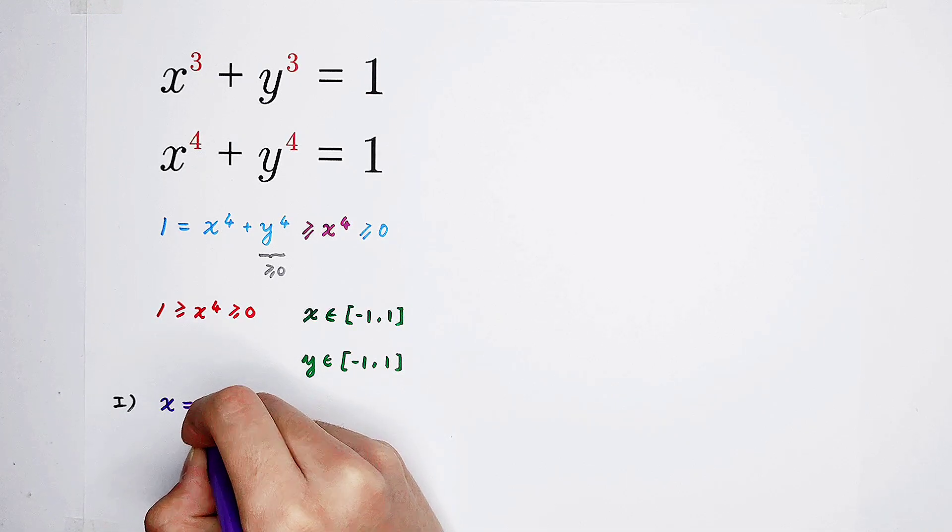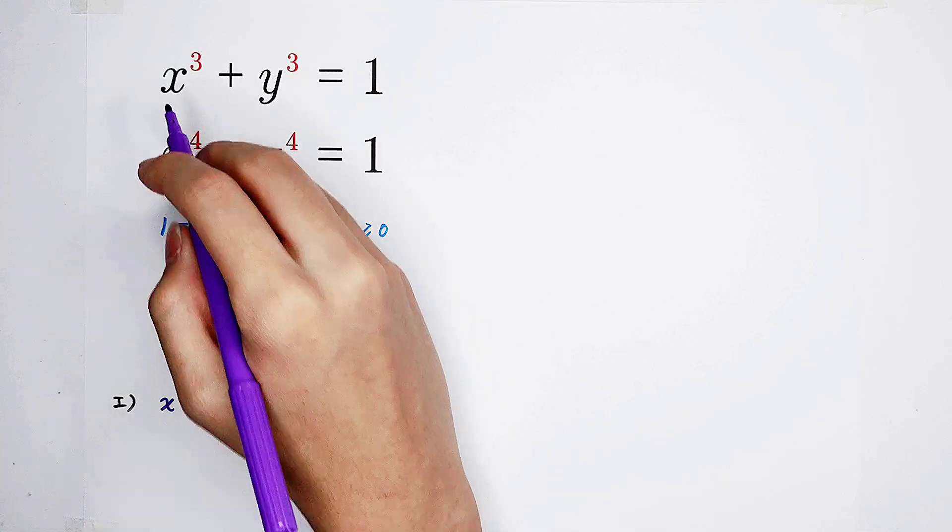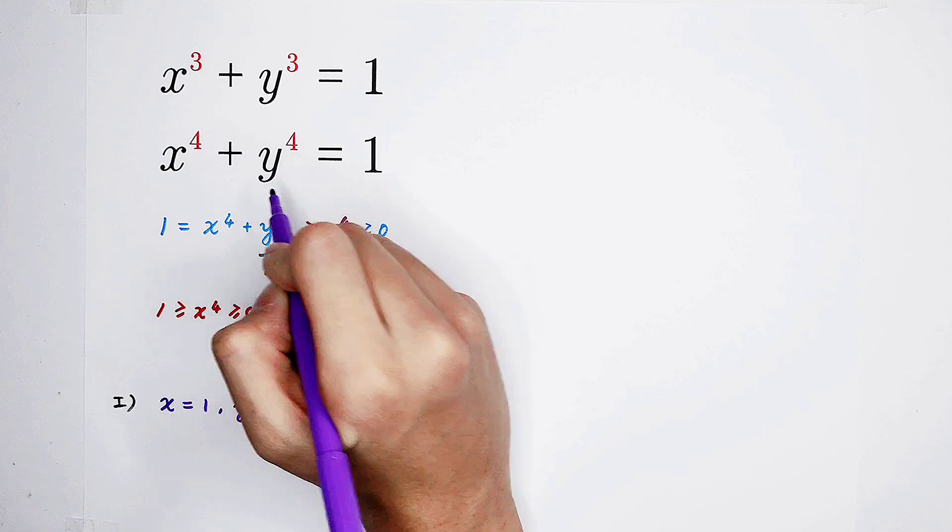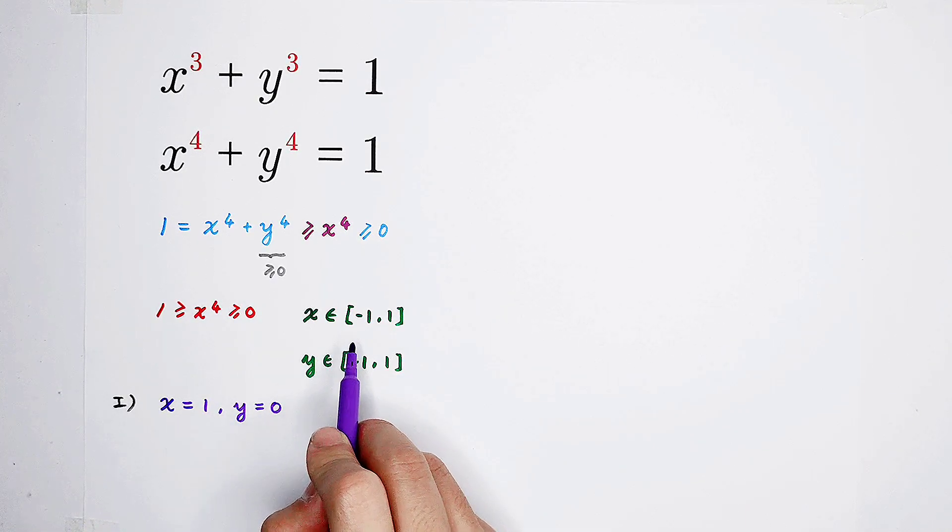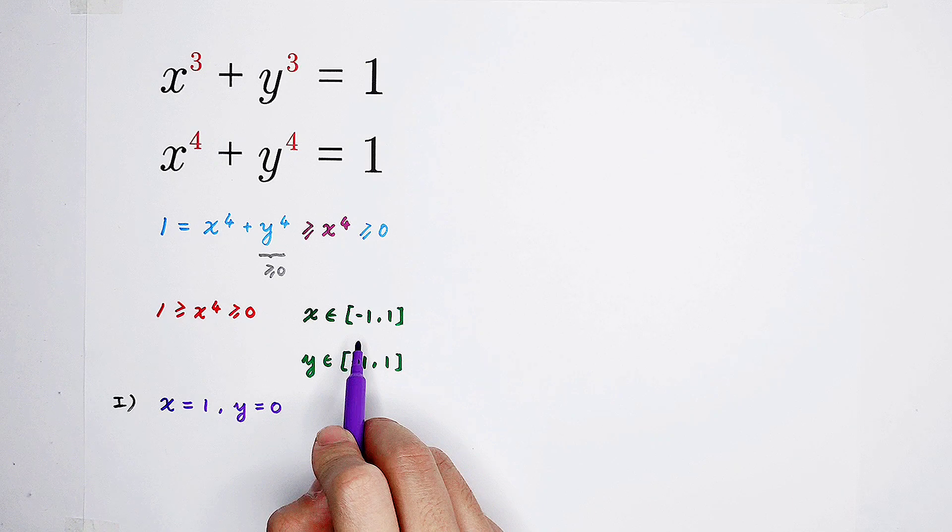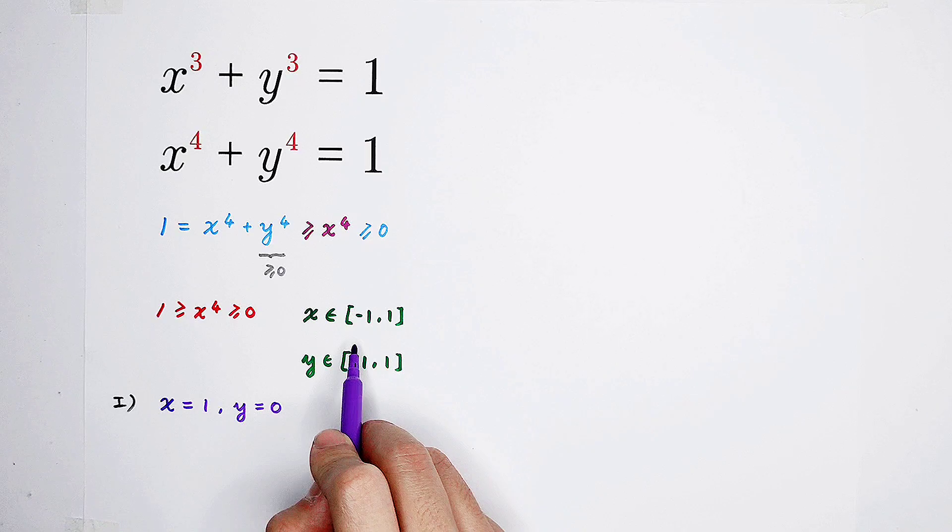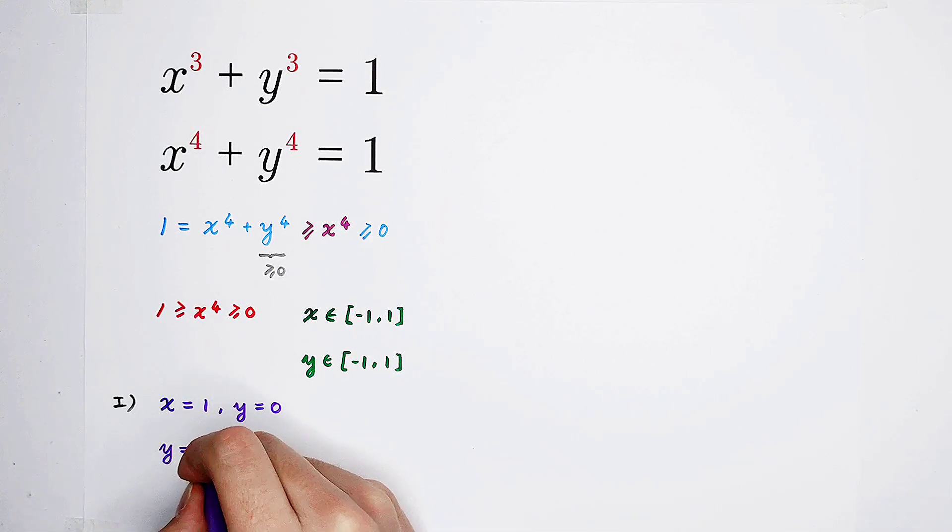If x equals 1, y is 0. 1 cubed plus 0 cubed is 1. 1 to the power 4 plus 0 to the power 4 is also 1. Okay, it is a solution pair. And if x is negative 1, there's no solution because from the first equation and from the second equation, you get two different values for y. And if y equals 1, of course,